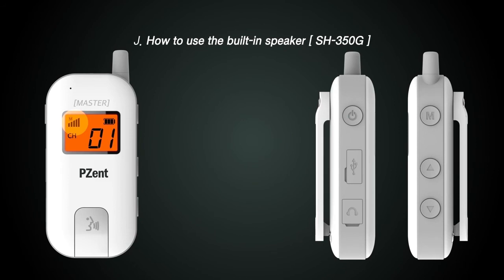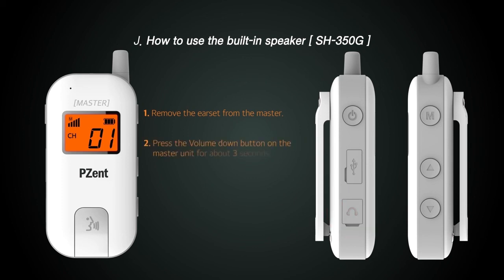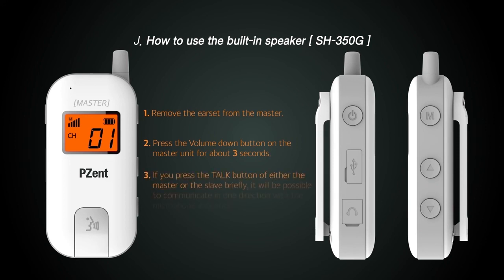This is how to use the built-in speaker and microphone, a special function of SH350G. With the earpiece off, press the volume down button on the master unit to change to the built-in speaker mode. After the talk function lock is released, press the talk button on the front to start communication. In built-in speaker mode, only one-to-one, one-way communication is possible.